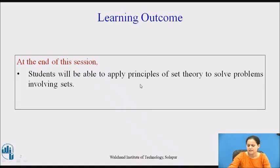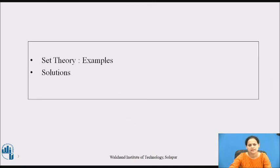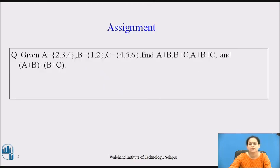This way we have solved certain examples, and you have got an idea how to go about solving problems based on sets. Here is an assignment for all of you. Given A equals {2, 3, 4}, B equals {1, 2}, and C equals {4, 5, 6}, find A plus B, B plus C, A plus B plus C, and A plus B plus B plus C, where plus denotes the Boolean sum operator. You have to apply the Boolean sum and find out the answers for the given sets.